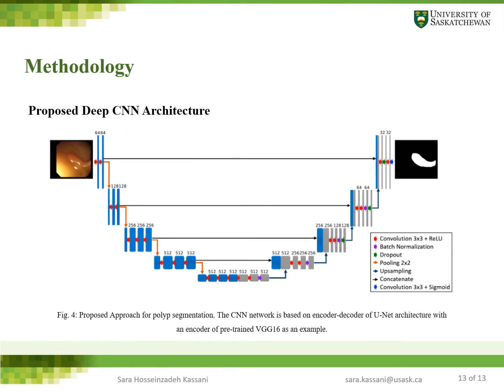The figure in this slide illustrates the proposed CNN network based on the U-Net architecture. As you can see, there is a U-shaped architecture, and the downsampling part uses a VGG16 feature extractor as an example.